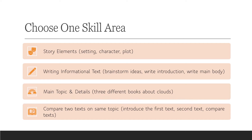Or you could choose main topic and details and choose three different books about clouds. In all three books, they will be identifying the main topic and the details, but the three different books will change. Or you could choose the standard that's comparing two texts on the same topic — in lesson one you introduce the first text, in lesson two the second text, and in lesson three you compare the two texts.